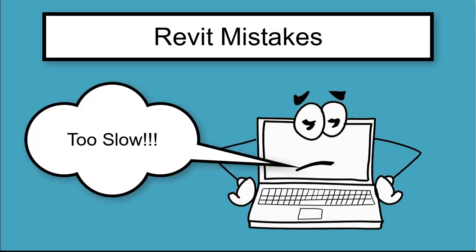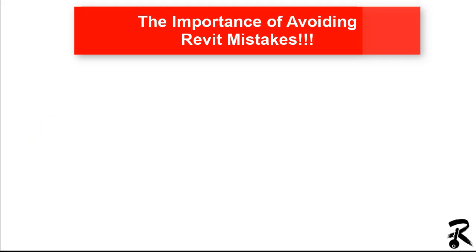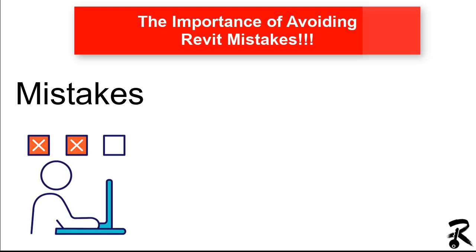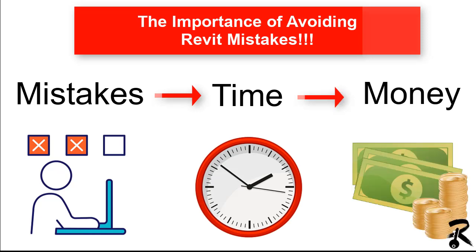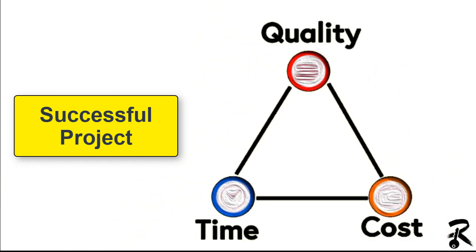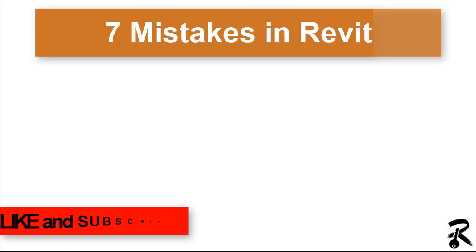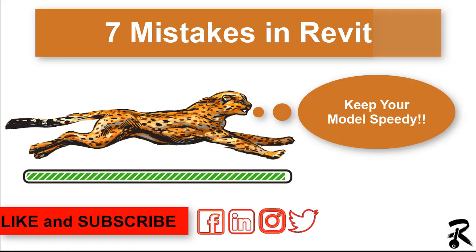Hello guys and welcome to Revit Keys. Today in this tutorial I want to talk about the mistakes that slow you down. It is important to avoid mistakes in Revit because mistakes will make you lose time, and time will cost you money. An important reminder is the iron triangle — for a successful project you have to deliver quality and take into consideration your cost and time. So what are those seven mistakes in Revit that we must avoid to speed up our model?